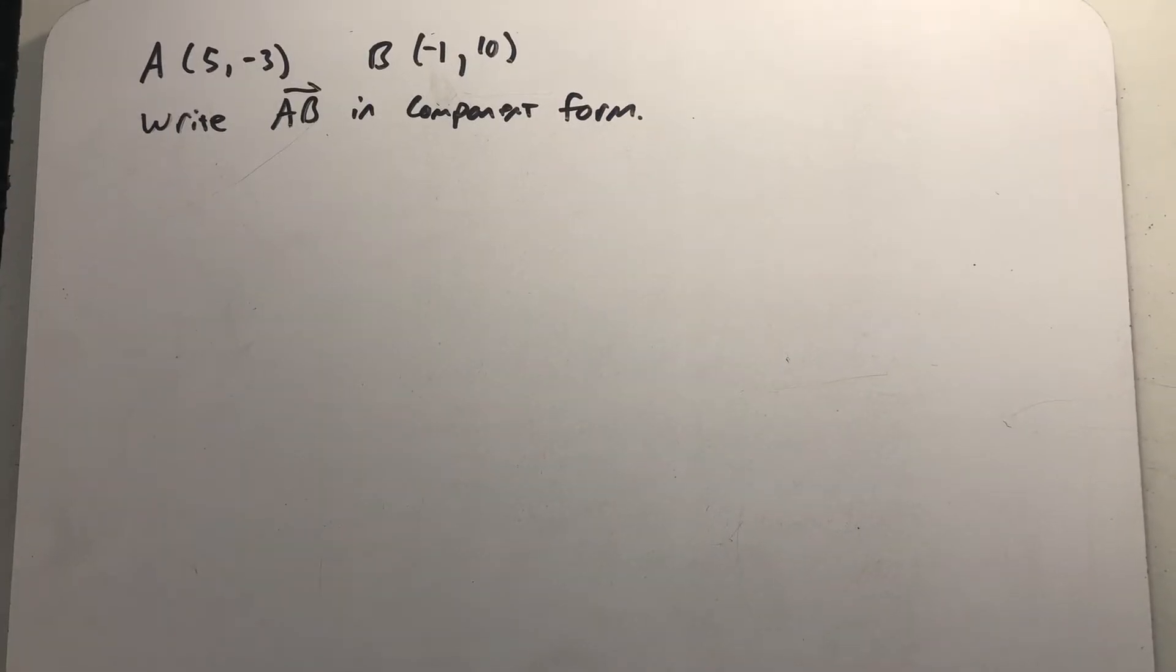We've been given two points. A is five comma minus three and B is minus one comma ten and asked to write vector AB in component form.